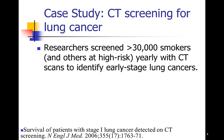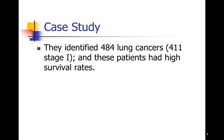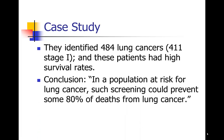Researchers screened more than 30,000 smokers and other people at high risk of lung cancer annually with CT scans to identify early-stage lung cancers. Out of those more than 30,000 people, they identified 484 lung cancers, most of them in stage one — which is very atypical, since lung cancer is usually identified at later stages. Those patients were treated and had very high survival rates in the 88% to 90% range. They concluded that CT screening was effective and that in a population at risk for lung cancer, such screening could prevent some 80% of deaths — which was really an over-extrapolation from the data they had.